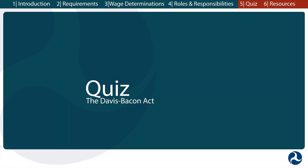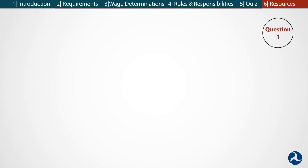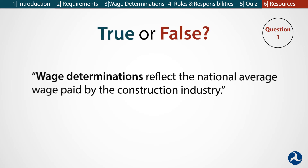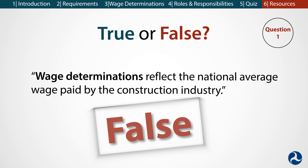That was a lot of information. Let's take a moment to review some of it by going through a quick quiz. Question 1. True or false? Wage determinations reflect the national average wage paid by the construction industry. False. Wage determinations reflect the prevailing wages and benefits paid by the construction industry in a specific locality for a specific skill set, so the wage determination is likely different in different parts of the country.